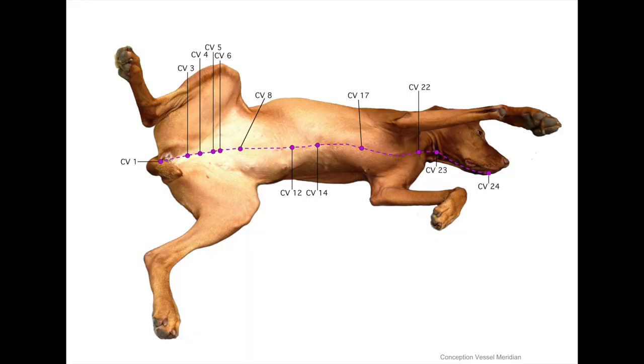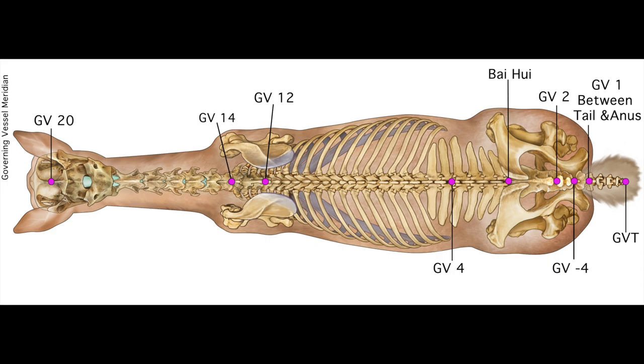GV is governing vessel, CV is conception vessel. I want to talk about these two meridians first — they are considered extraordinary meridians, meaning they only have one channel. Conception vessel goes right down the middle of the front, governing vessel goes right down the middle of the back. So when you see points that have a GV or a CV, you only illuminate just that one point.